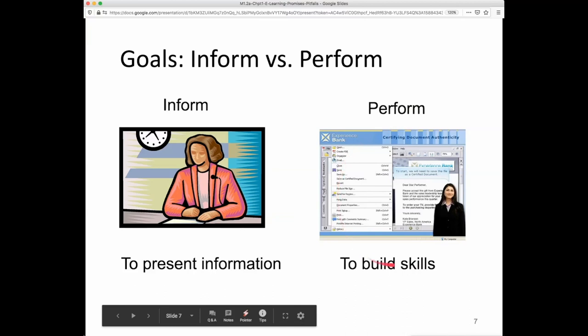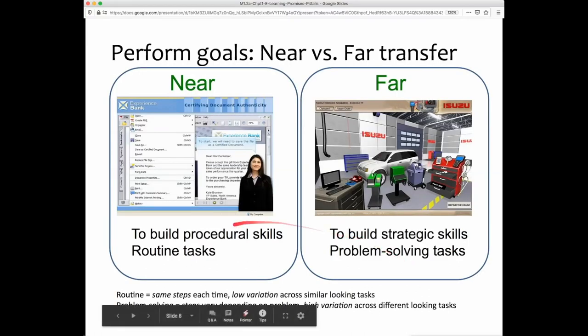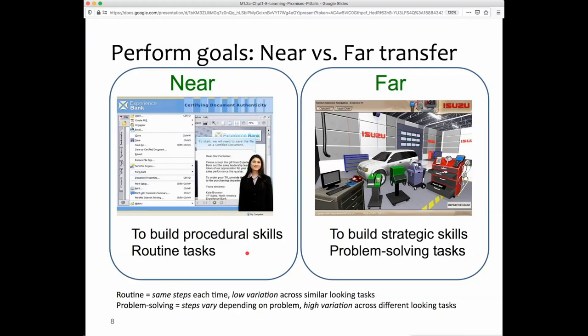So that's the perform stage. Building skills might be more particular to more routine kinds of tasks, and we'll make a contrast there between the perform goals which are more near, building procedural skills for tasks that have the same steps each time and low variation across similar or sometimes the identical tasks that you do over and over again. Sometimes it's just small variations on similar tasks.